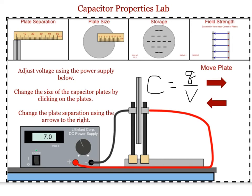You can also have students test what will happen if the power supply is shut off. If we go into the program and shut the power supply off, then move the plates apart, students can see that changes take place in the energy and the voltage. The amount of charge stored on the plates won't change with the power supply off, but as we pull the plates apart, since the plates are oppositely charged, there's a force trying to pull them together, so pulling them apart adds energy to the system.